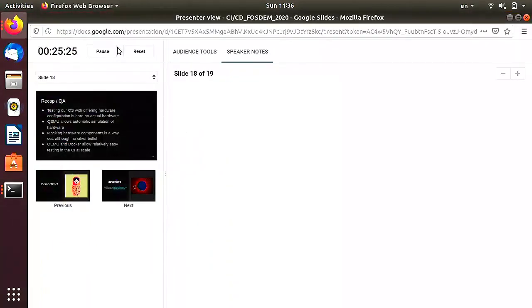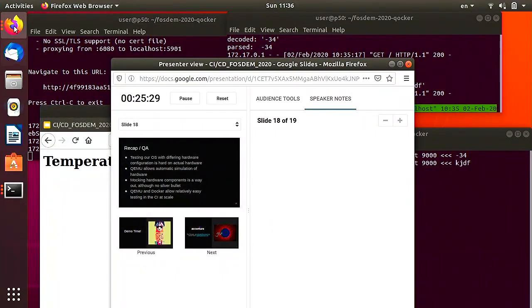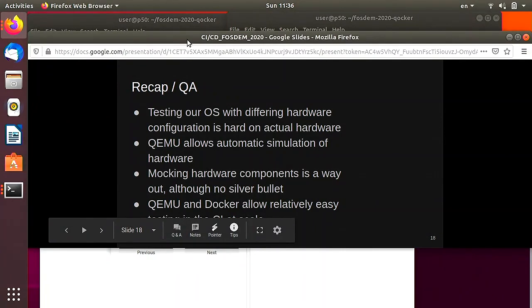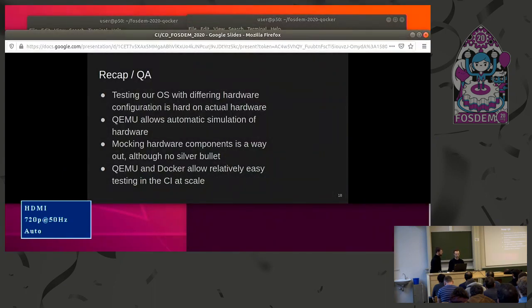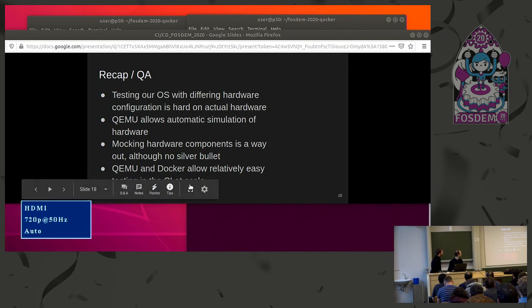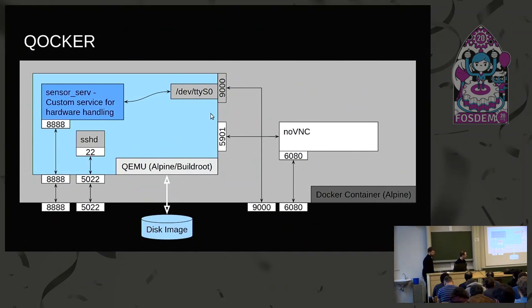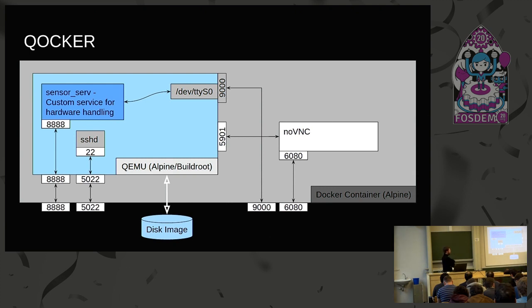All our devices have a Prometheus exporter endpoint — Prometheus is scraping metrics from the system. It's interesting to see things like brightness over the day, and it's also quite useful for diagnostics. Going back: we pushed some data in here, it got processed by the custom service and got exposed on port 8888 again — so this is like a round trip through the software to test it.